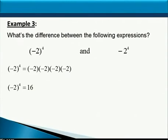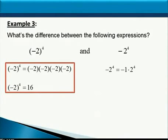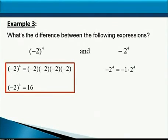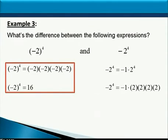Now let's look at the other expression — the one without parentheses. One way to think of it is as negative 1 times 2 to the fourth. We're raising 2 to the fourth power and then making it negative, which is the same as multiplying by negative 1. With exponents done before multiplication, we raise positive 2 to the fourth: 2 times 2 times 2 times 2 is 16, then multiply by negative 1. Only 1 of the 5 numbers is negative — an odd count — so we get negative 16.